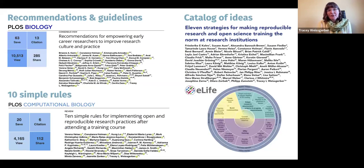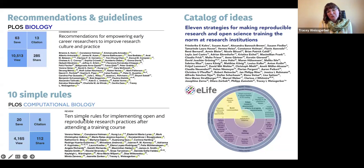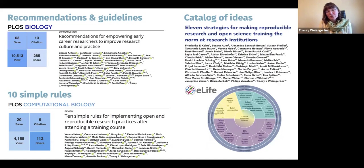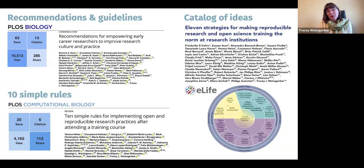Examples of structures we've used include recommendations or guidelines, such as the early career researcher recommendations and the PROMAP guidelines. We've also done '10 simple rules' papers, where the best way to convey content was by offering others ten simple rules. And then there's the catalog of ideas — where people at different institutions were implementing various strategies to make reproducible research the norm, and a catalog best showcased those strategies, getting people thinking about how to involve people in administrative, teaching, technical, and research roles, sitting on committees and more.